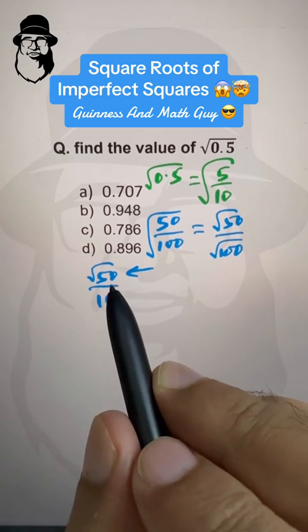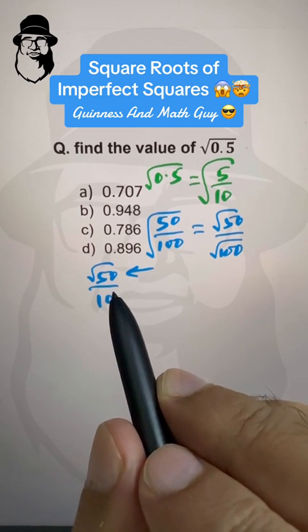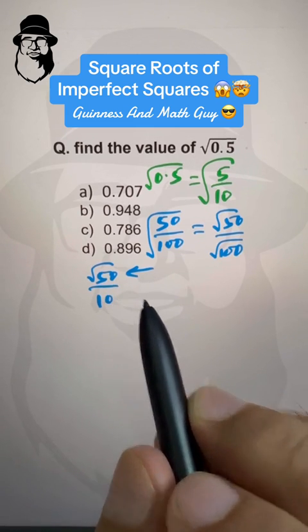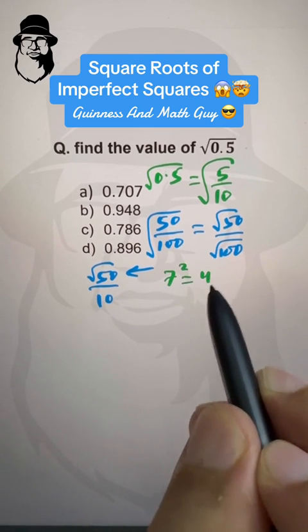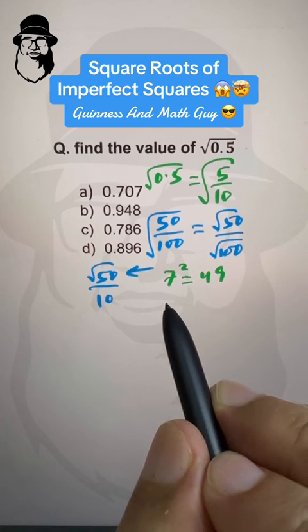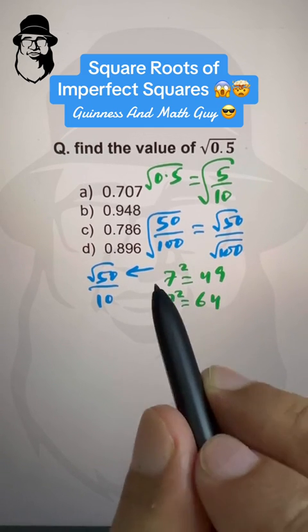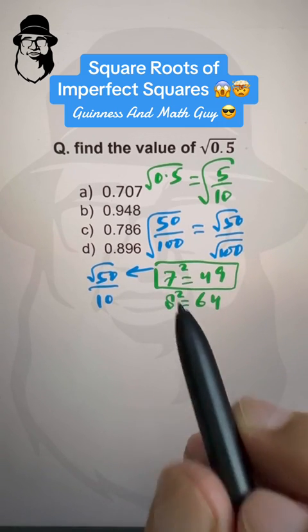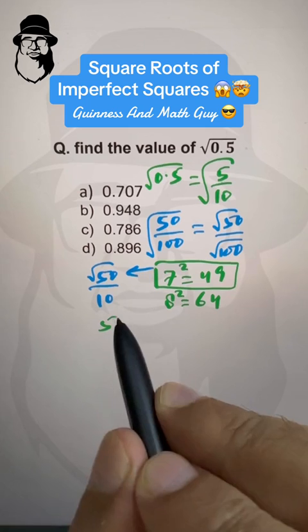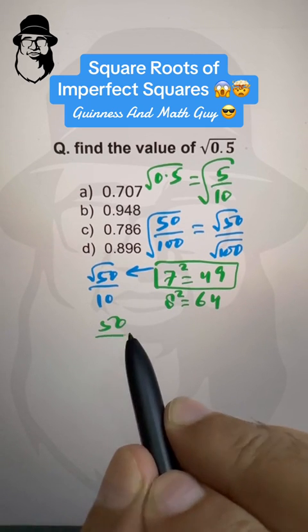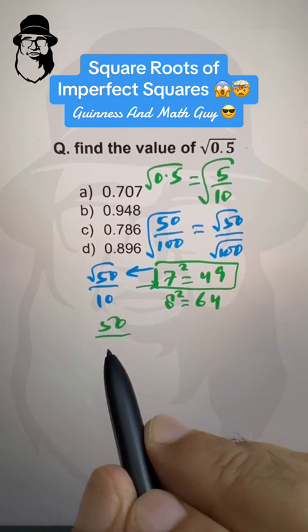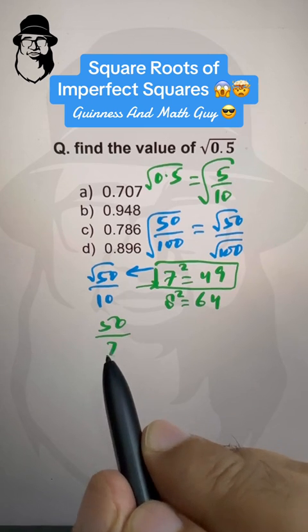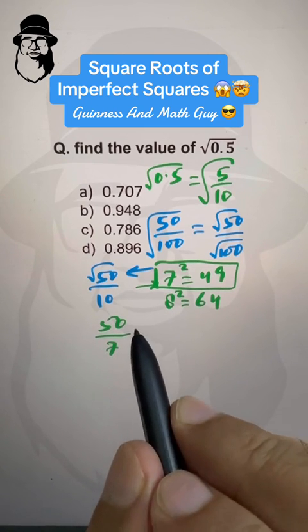Okay, now, what is the nearest perfect square that is near 50. So, we can write 50 as it is, the first step in the numerator, and the square root of the nearest perfect square in the denominator.